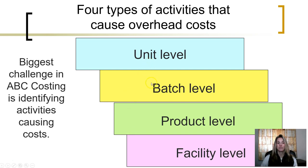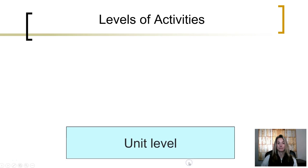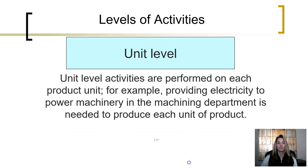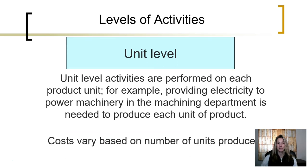Unit-level activities are activities that are performed on each unit of product. For example, electricity being provided to power the machinery in the machining department is needed to produce each unit of product. The electricity costs vary based on the number of units produced.